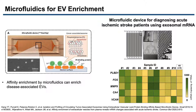These devices also have the ability to integrate post-enrichment processing steps such as enumeration and molecular profiling of the EV cargo. This microfluidic device shown here was fabricated using thermoplastics via micro-injection molding, and it was used for diagnosing acute ischemic stroke patients using exosomal mRNA. This device was successful in enriching EVs from clinical plasma samples and gene profiling the EVs via droplet digital PCR for identifying stroke patients, with a total assay time of 220 minutes.